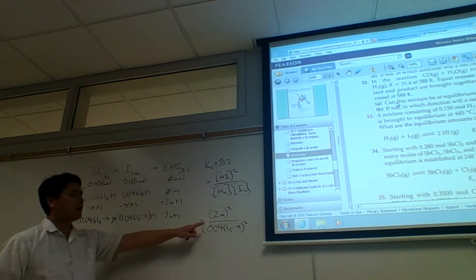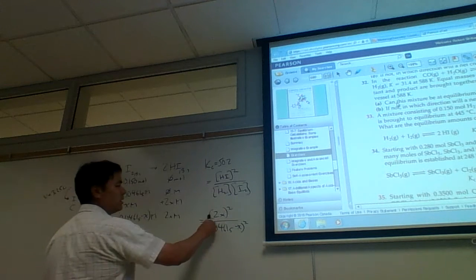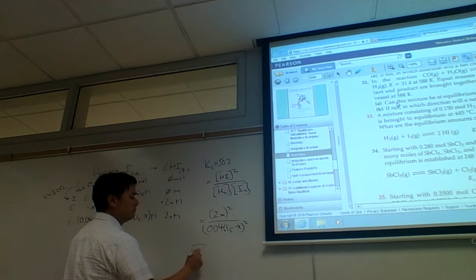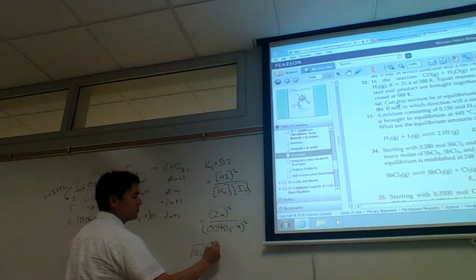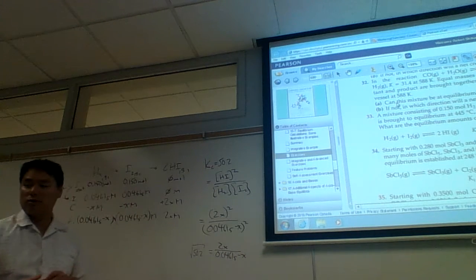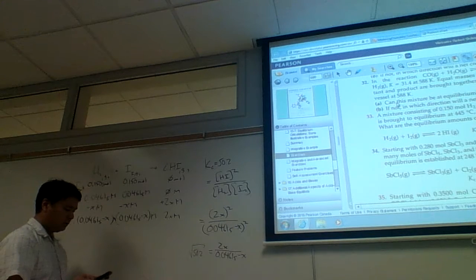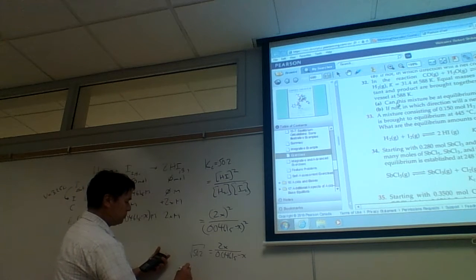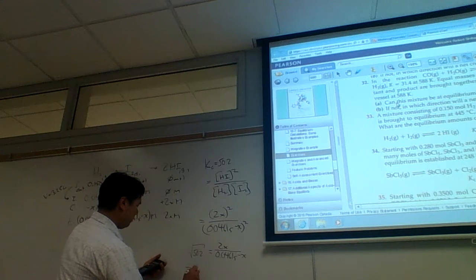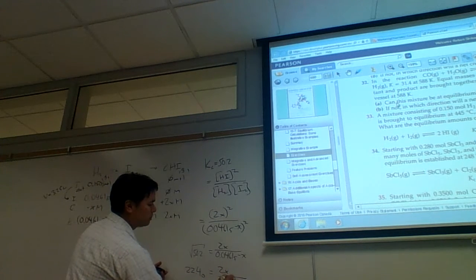And probably, the easiest, this is a quadratic, so we could multiply it out in the quadratic form, but it looks like this one, we don't have to do that. We don't have to do that because everything on the right is squared. And so if we just square root the left side, which would be 50.2, so the square root of 50.2, and then we'll get rid of the square. So this is going to come out 2x over 0.04615 minus x. And so it's not even a quadratic, it's a little easier to solve this mathematically. And so let's go ahead and take the square root of 50.2.